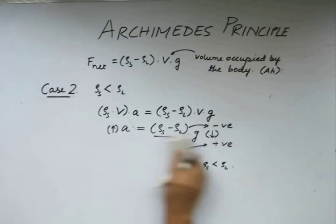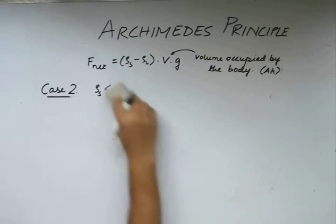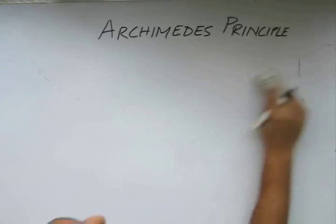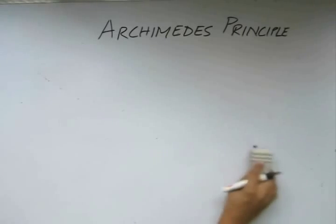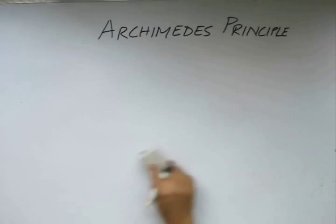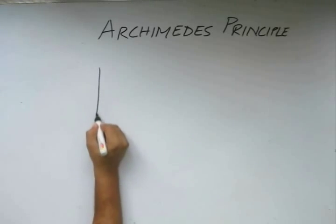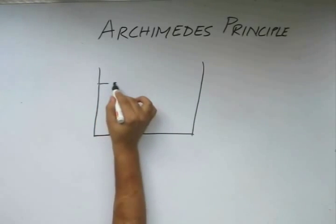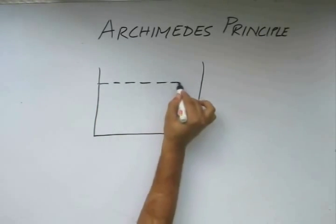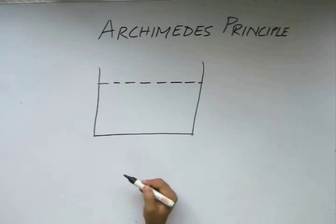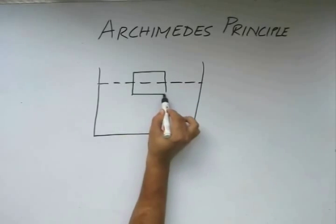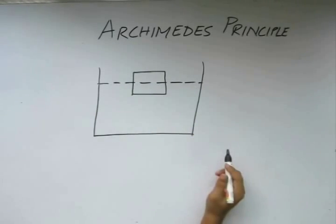Now let us consider a totally different aspect. We have considered that the body is submerged in a liquid while doing all our calculations. Now let us say the body is partially submerged. We again have this liquid container filled up by that liquid to some height, and we have a solid body which is floating on the surface of this liquid.